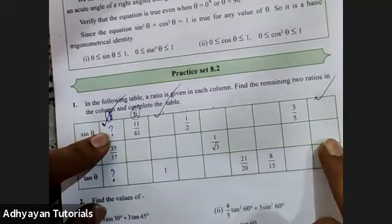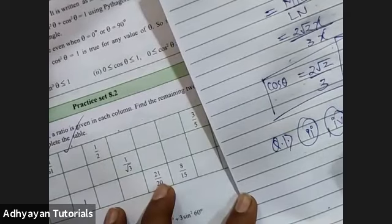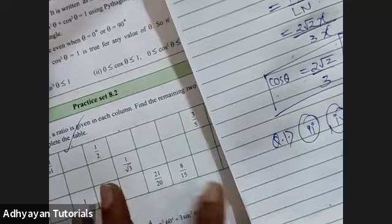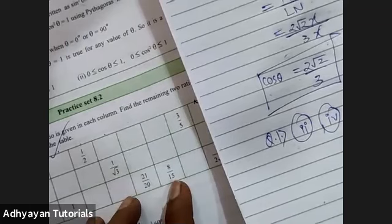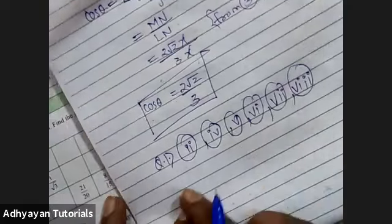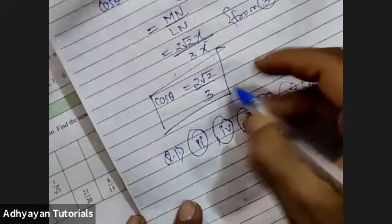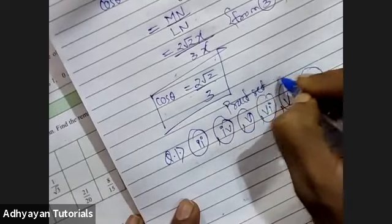I've completed the first, third and ninth sub-questions. I would expect you kids to complete the second column, fourth column, fifth column, sixth column, seventh and eighth columns as well. It's your choice what method to use — triangle or identity. This is from Practice Set 8.2.